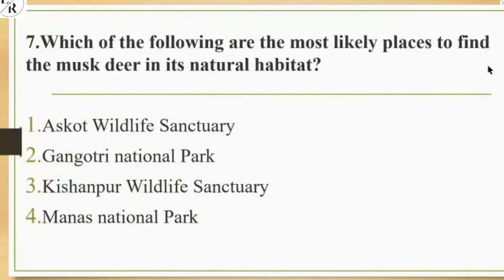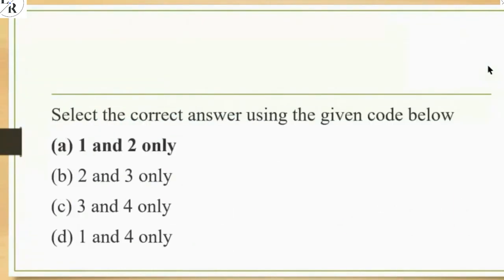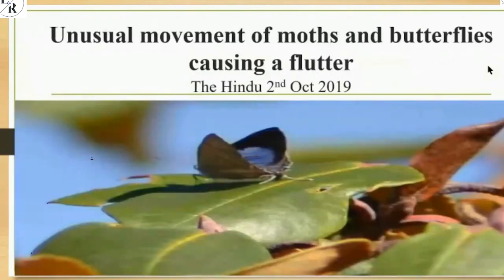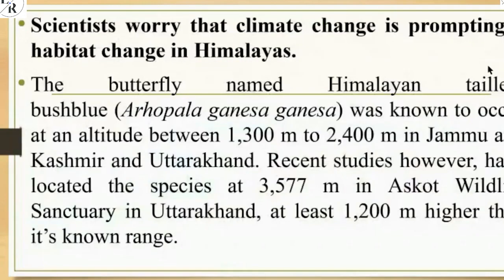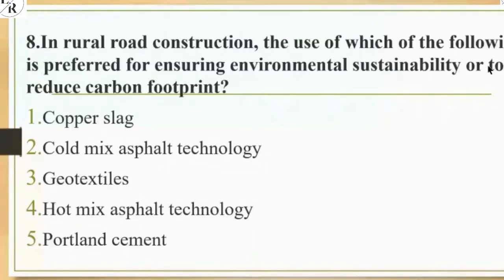The seventh question: which of the following are the most likely places to find musk deer in its natural habitat? Musk deer were not directly in discussion in 2019-2020, but Askot Wildlife Sanctuary was in the limelight. The answer is options 1 and 2. There was an article in The Hindu on 2nd October 2019 — 'Unusual movement of moths and butterflies causing a flutter' — discussing scientists' worries that climate change is prompting habitat change in the Himalayas, with reference to Askot Wildlife Sanctuary in Uttarakhand. UPSC asked about musk deer but Askot was in the options.